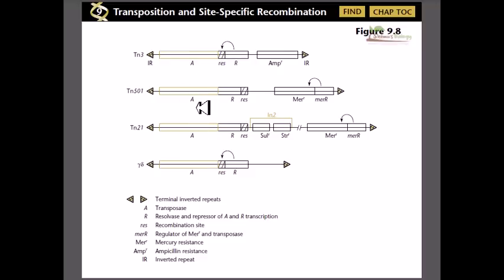The second thing is this res region, which is the recombination site. The recombination site is important because from this region, this transposable element can be recombined with the donor DNA and the recipient DNA.